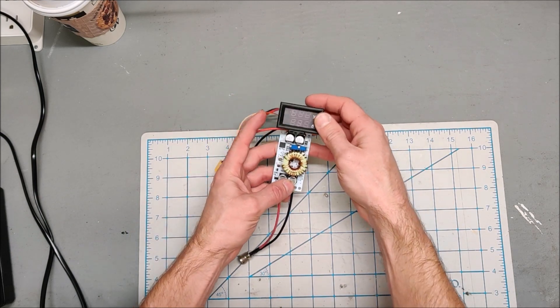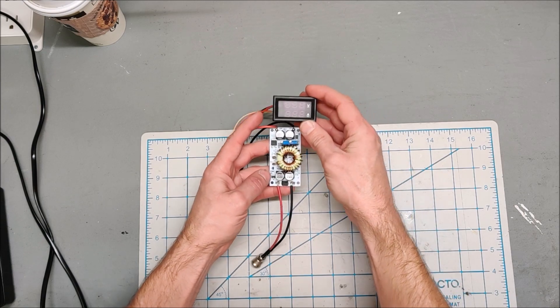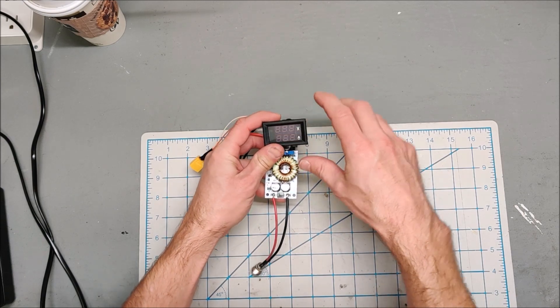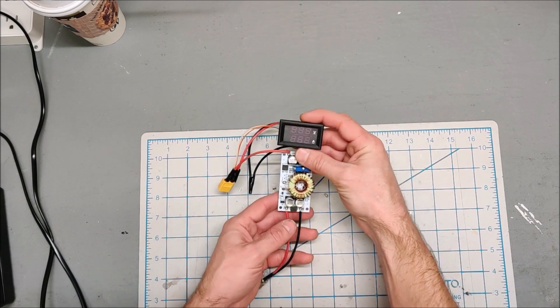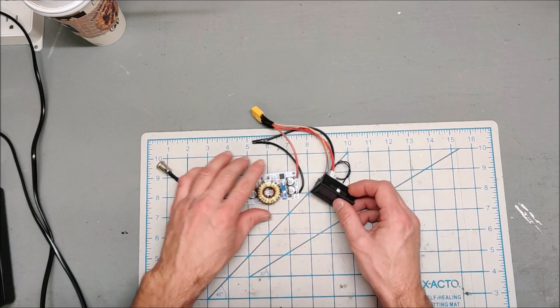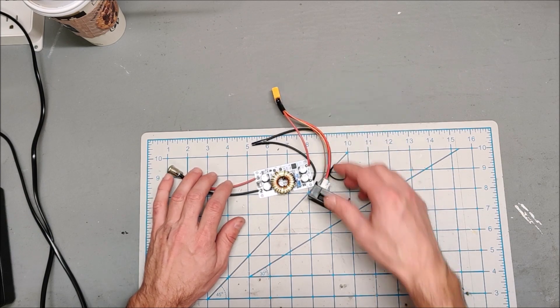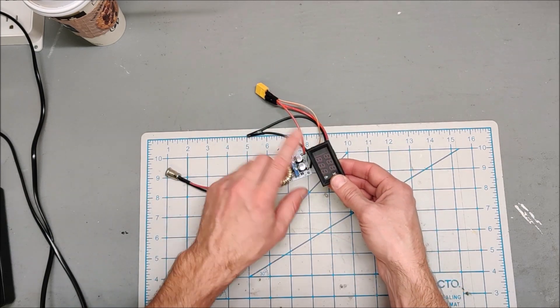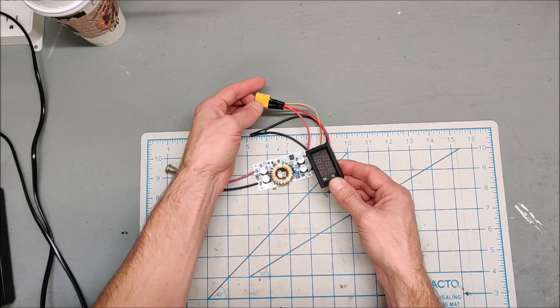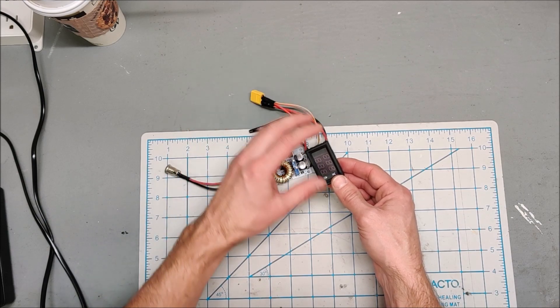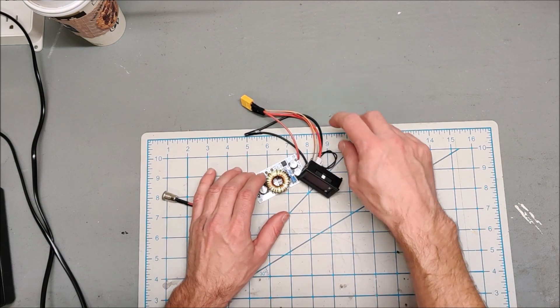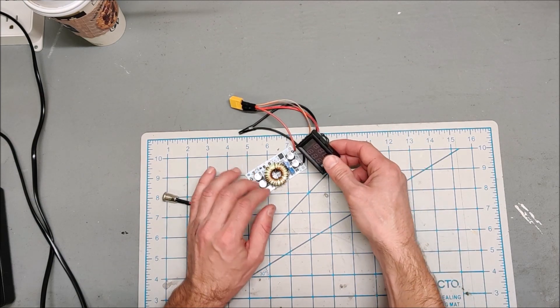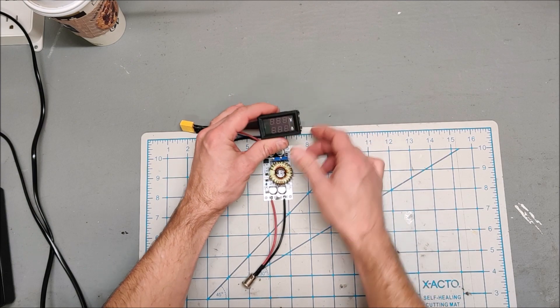You could put this in one of those little project boxes, mount this on the face, screw it up, and that could be your solar charge controller right there. The only thing you would have to do is probably put a switch on the output just because the battery will keep the gauge always on and you don't always want to be running the gauge if you're not using the solar charge controller.